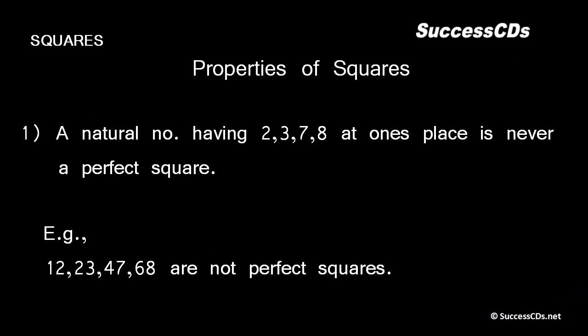Properties of squares: A natural number having 2, 3, 7, or 8 at the ones place is never a perfect square. For example, 12, 23, 47, and 68 are not perfect squares.